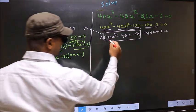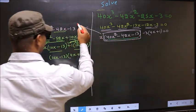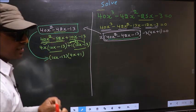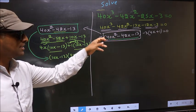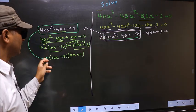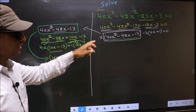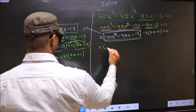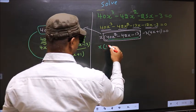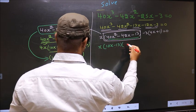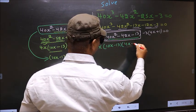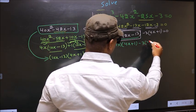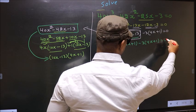Now, in place of this quadratic, you replace this. So this equation will become x times 10x minus 13, times 4x plus 1. Here, no change — minus 3 times 4x plus 1, equal to 0.